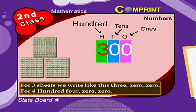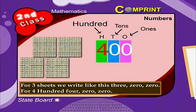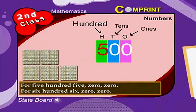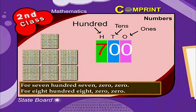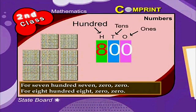For three sheets we write three zero zero. For four hundred, four zero zero. For five hundred, five zero zero. For six hundred, six zero zero.